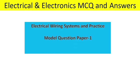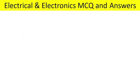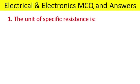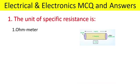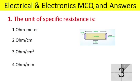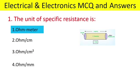Model Q1 part A MCQ with answer. The unit of specific resistance is: Ohm meter, Ohm per centimeter, Ohm per centimeter square, Ohm per millimeter. Answer is Ohm meter.